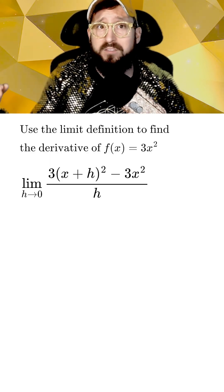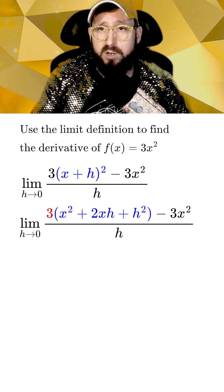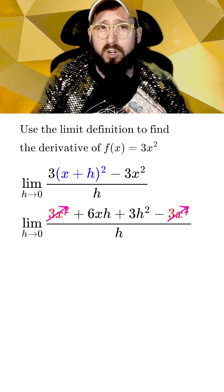We can kick things off by first expanding the x plus h squared to x squared plus 2xh plus h squared. Now we distribute the 3 and then cancel out like terms.